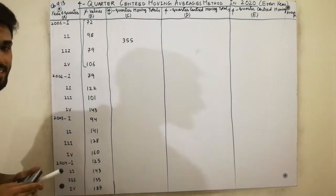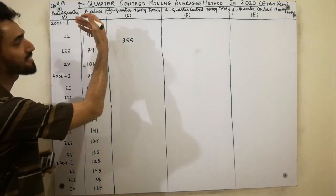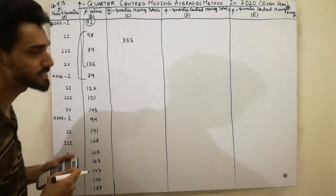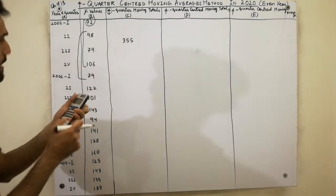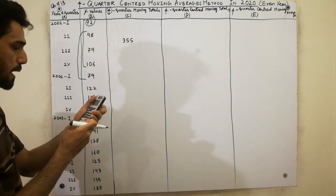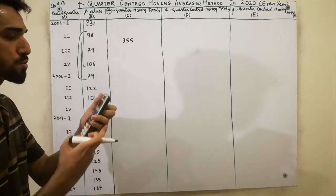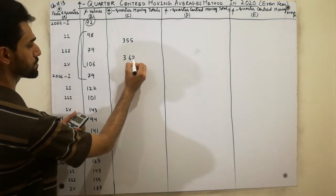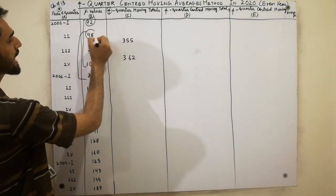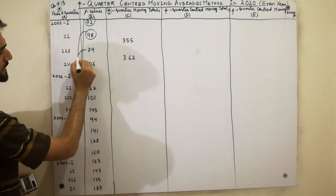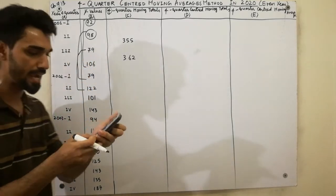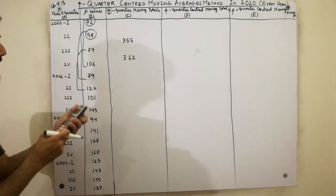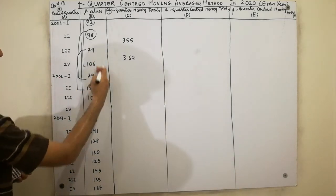Moving to the second total: we leave the first value and add the next four values — 98 plus 79 plus 106 plus 79. We get the value 362, written in the center. Then we leave that value and add the next four values: 79 plus 106 plus 79 plus 122. We get the value 386, written in the center.